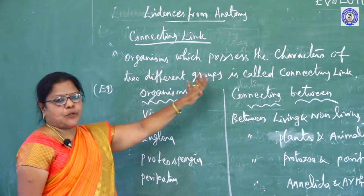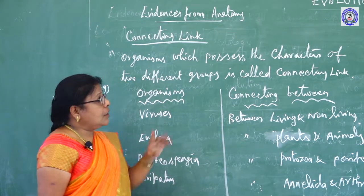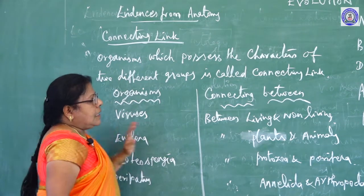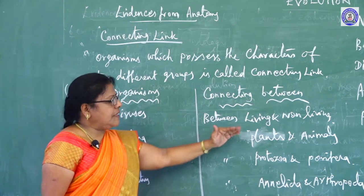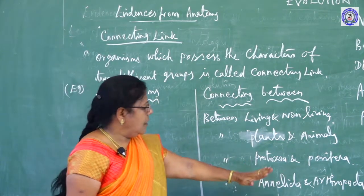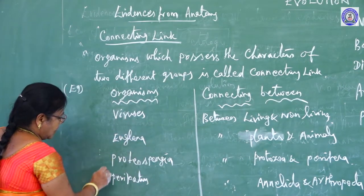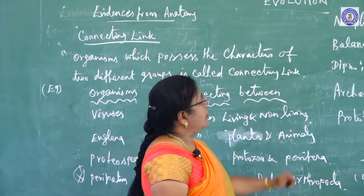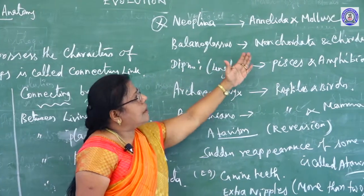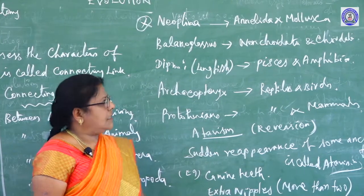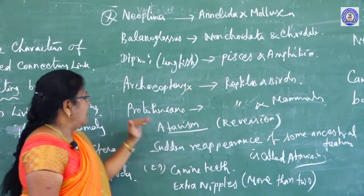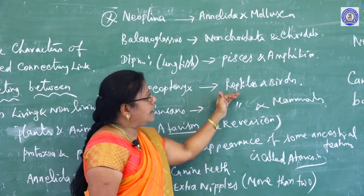Connecting links are organisms which possess characteristics of two different groups. Examples: viruses are the connecting link between living and non-living things; Euglena is between plants and animals; Proteospongia is connecting link between Protozoa and Porifera; Peripatus is a connecting link between Annelida and Arthropoda; Neopilina is a connecting link between Annelida and Mollusca; Balanoglossus gives connecting link between non-chordata and chordata; Dipnoi, the lungfish, gives connection between fishes and amphibians; Archaeopteryx gives connection between reptiles and birds; Prototheria, the egg-laying mammals, gives the connecting link between reptiles and mammals.